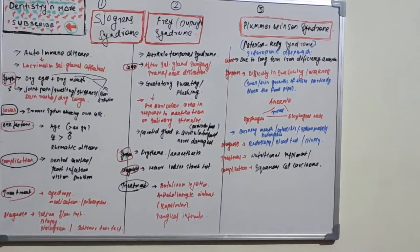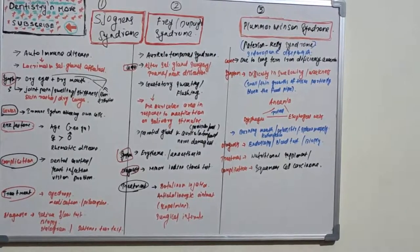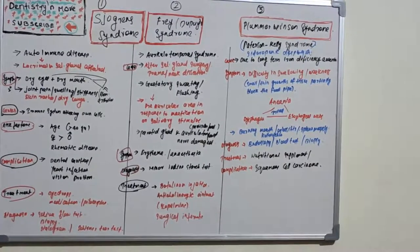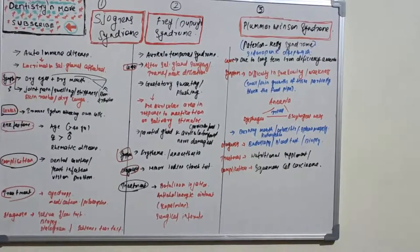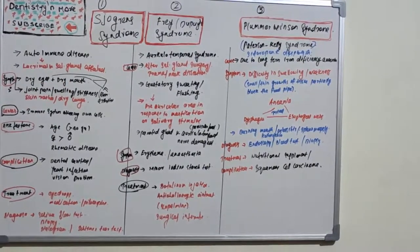Let's start with Sjögren's syndrome. It is an autoimmune disease, meaning the immune system is acting against our own body cells — it is supposed to act against foreign antigens, but by some error it acts against our own body system. The most common striking features of Sjögren's syndrome are dry eyes and dry mouth — lack of tears and lack of saliva.